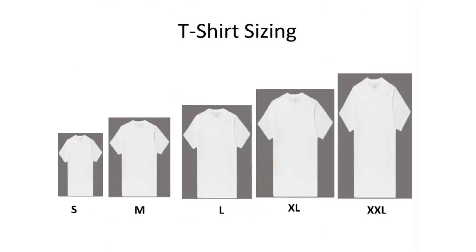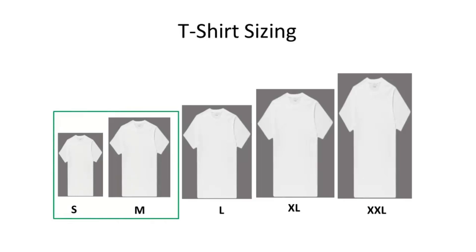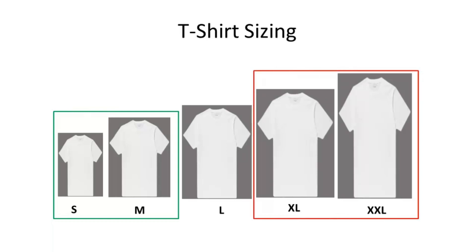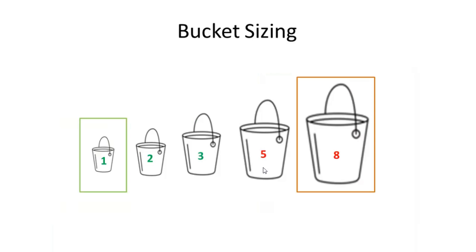Now let's move to T-Shirt Sizing. T-Shirt Sizing is a relative estimation technique commonly used in Agile implementations, especially where the team is new and the backlog is large and uncertain. Teams collaborate, discuss, and finally make a choice together for each requirement. The size of all requirements is estimated against one base requirement. The more the requirement is clear, the lower is the size selected; the more complex and unclear the requirement, the higher is the size selected.